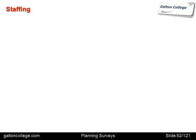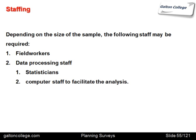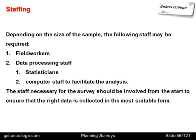Now, the staffing. Depending on the size of the sample, the following staff may be required: field workers to conduct the survey, data processing staff such as statisticians, and computer staff to facilitate the analysis. The staff necessary for the survey should be involved from the start to ensure that the right data is collected in the most suitable form. The statisticians and computer staff should be involved in the design of the forms right at the start to ensure everything fits smoothly into the final data analysis.